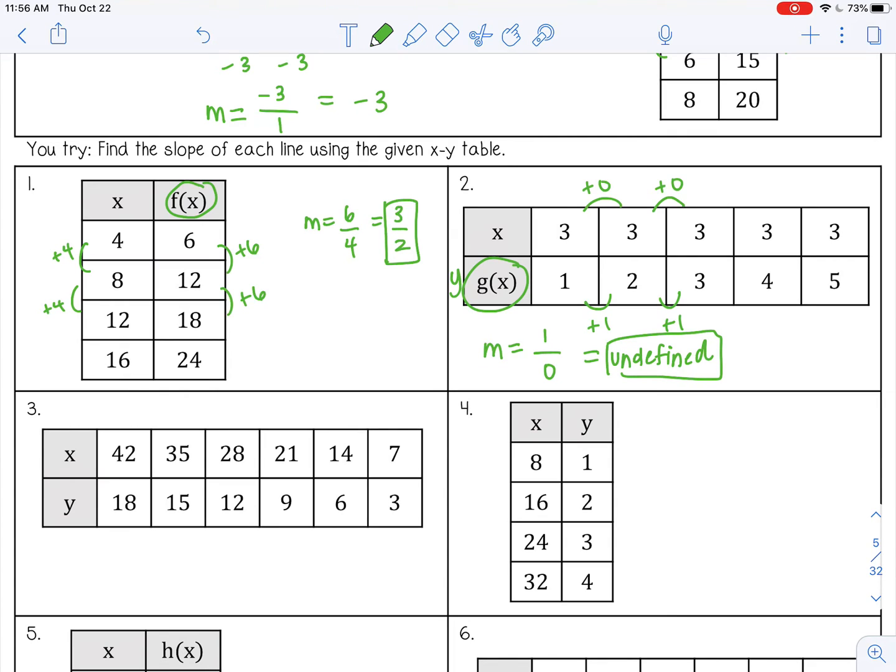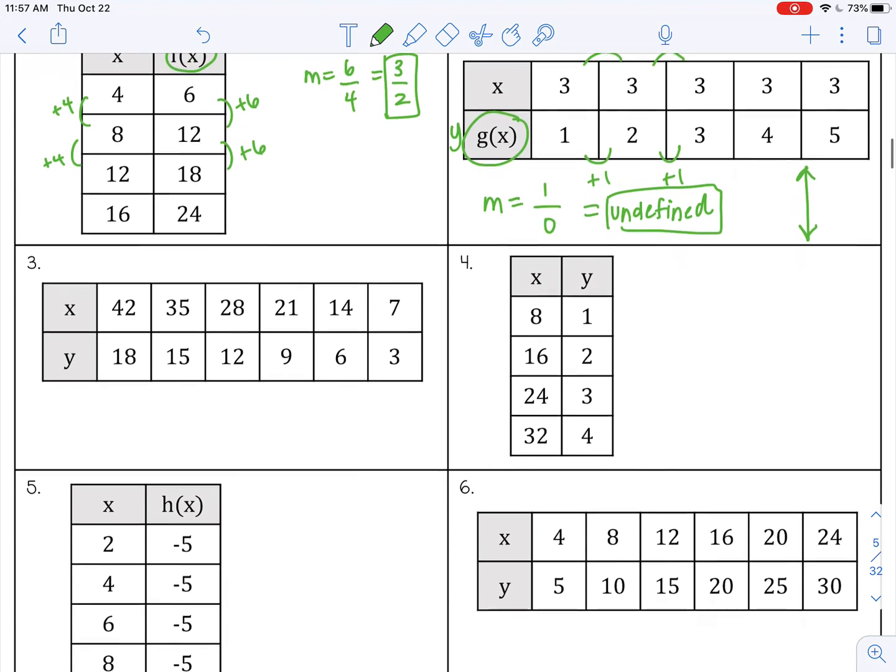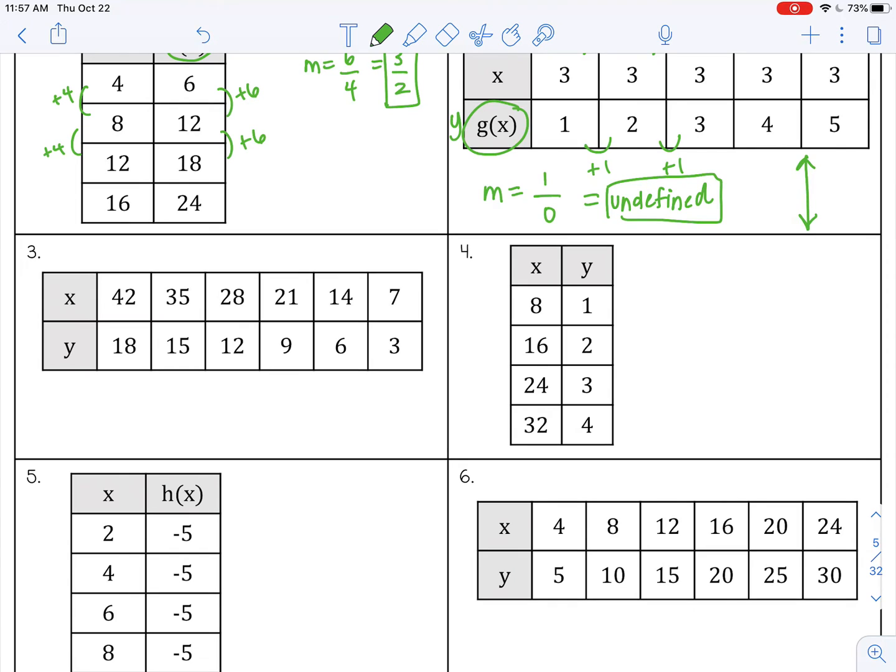So all that means is if you were to graph these points, it would create a vertical line. Remember, undefined is vertical. Go ahead and pause the video now and try three through six by yourself.